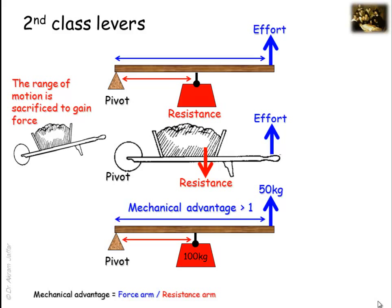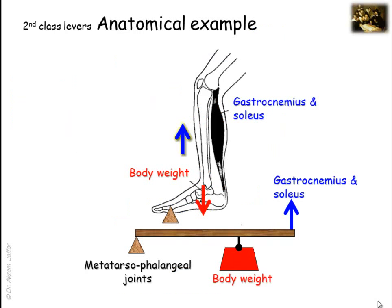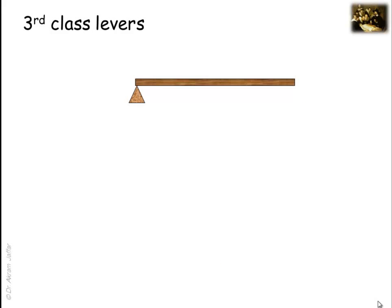This type of lever is rare in the body. The fact that muscle insertions are so frequently found close to the joints they move precludes many muscles from acting in a second-class lever system. However, plantar flexion of the foot at the ankle joint is an example. The pivot is at the metatarsophalangeal joints, the resistance is the line of gravity, and the force is the pull of the triceps surae muscle on the calcaneus. The range of motion is sacrificed to gain force, which is needed here to overcome body weight.